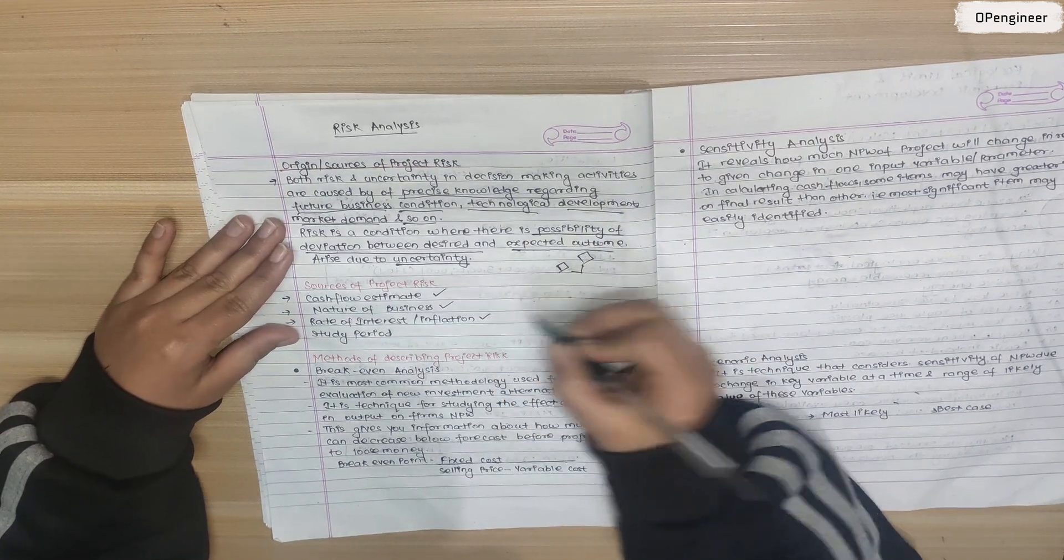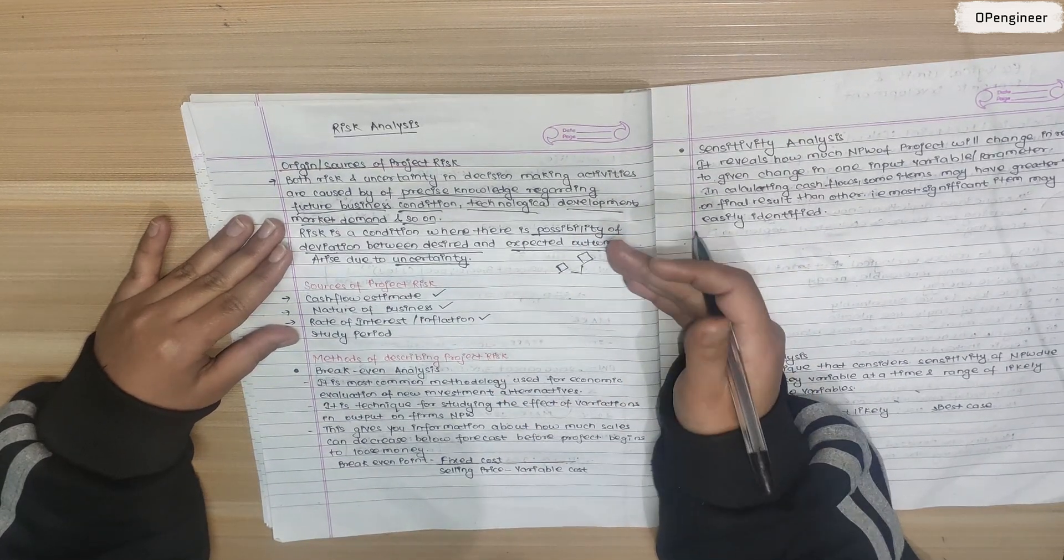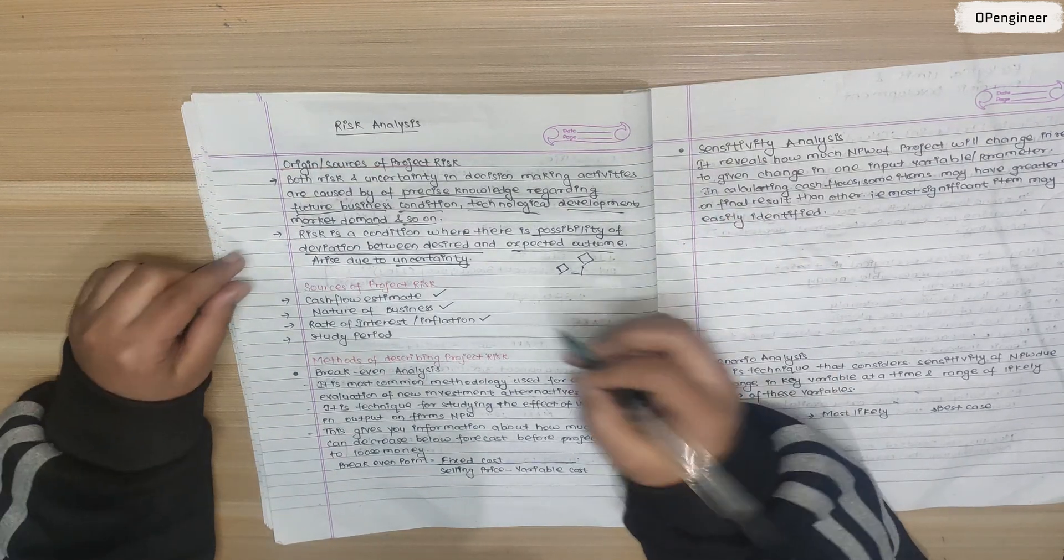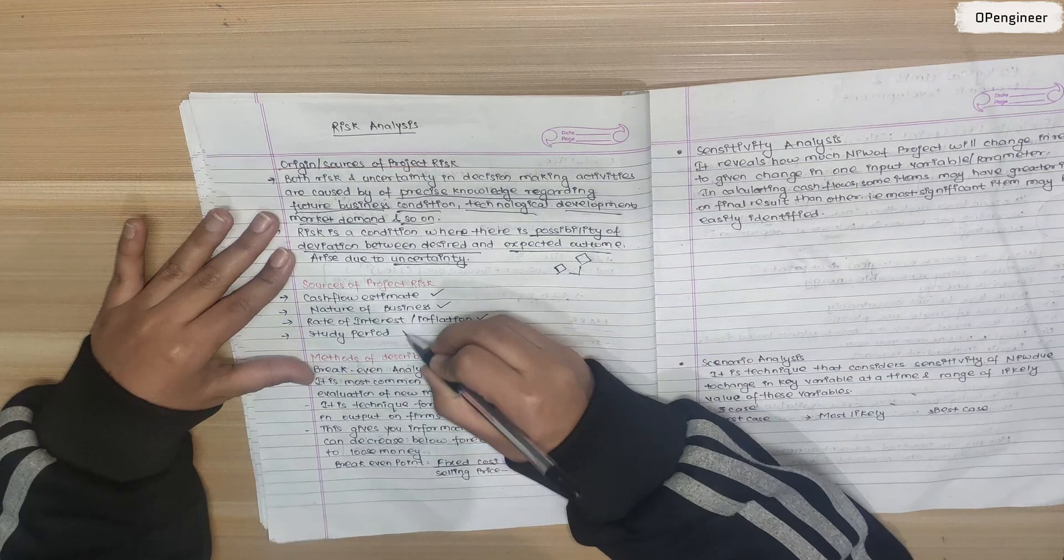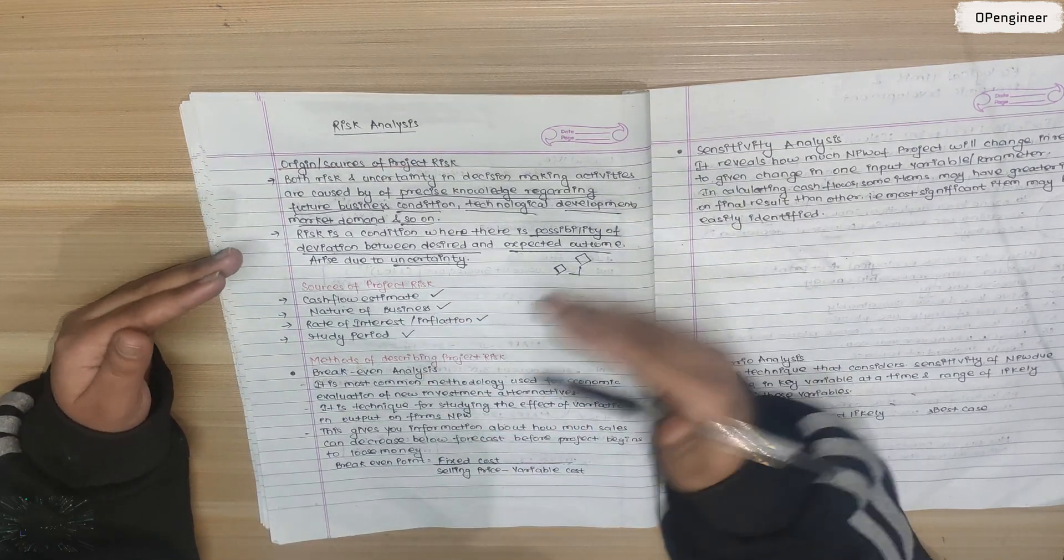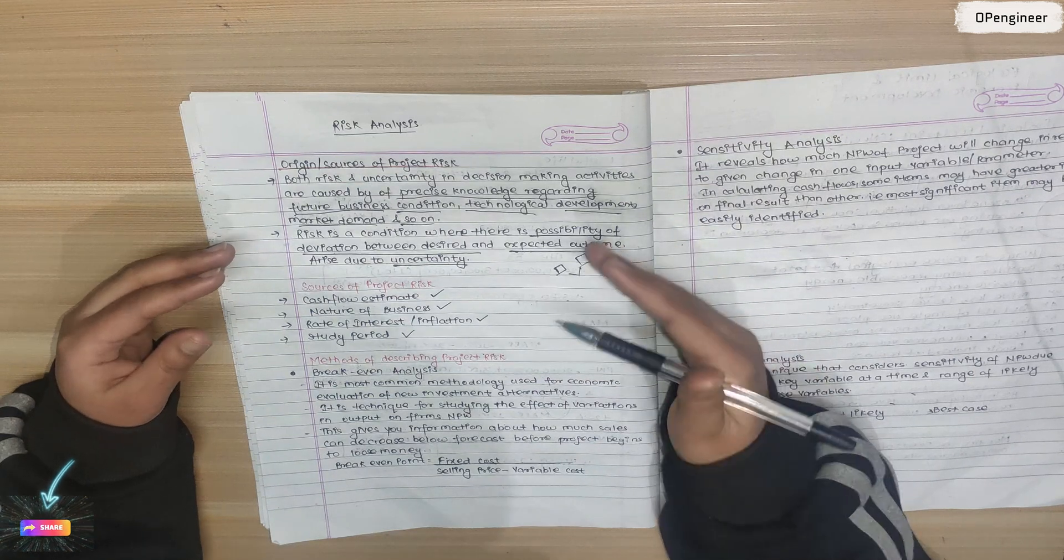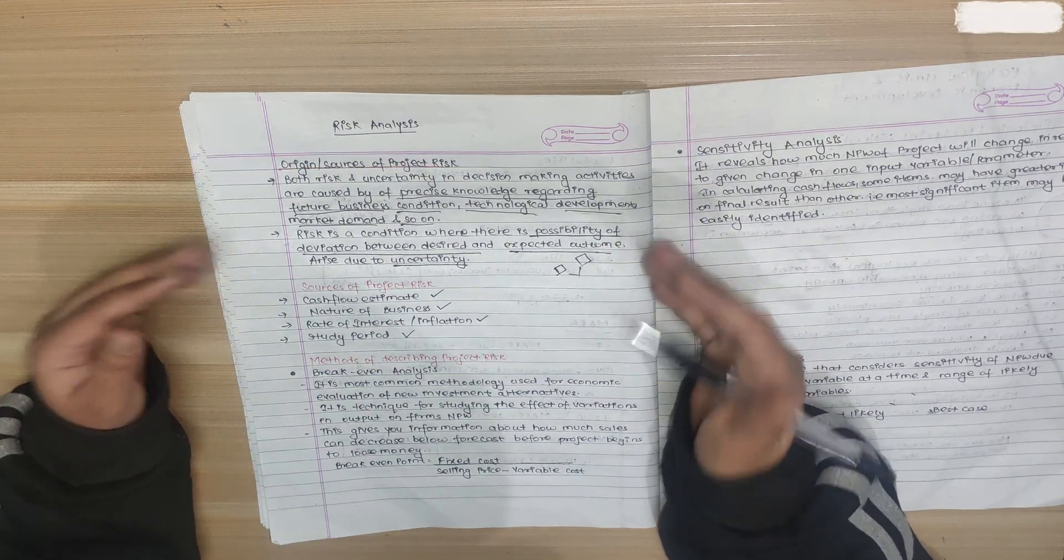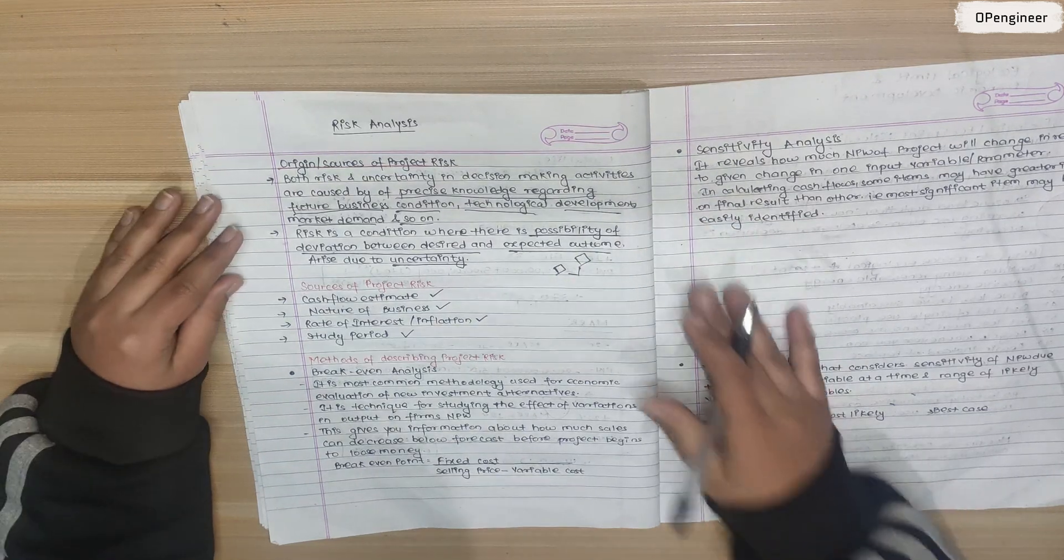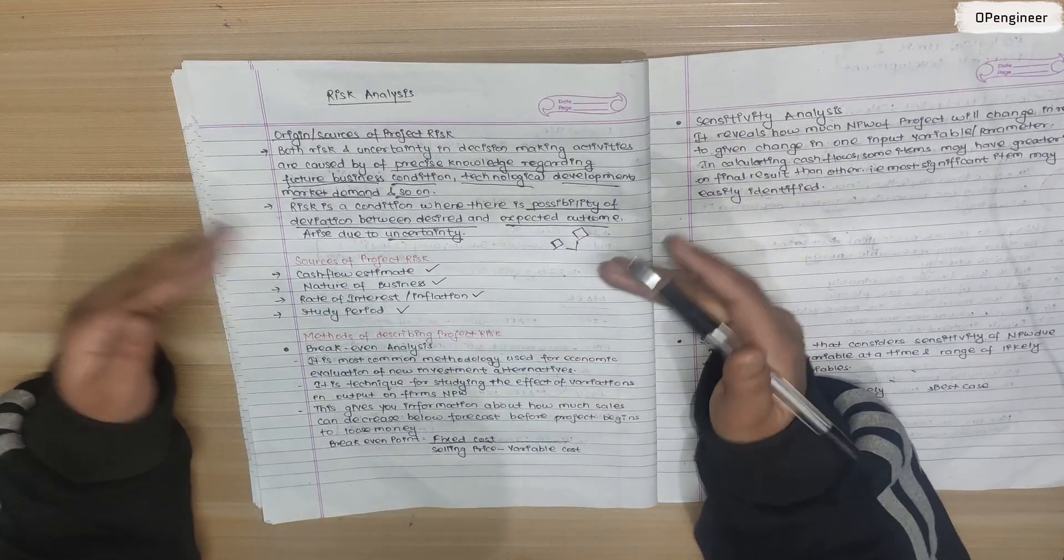Another is rate of interest - when I start a project, the rate of outcome after the project - this also creates project risk. And study period - the better I study the project, the better I can execute the project and there is less risk. If my study period is less, there will already be risk in my project. So this is about project risk.